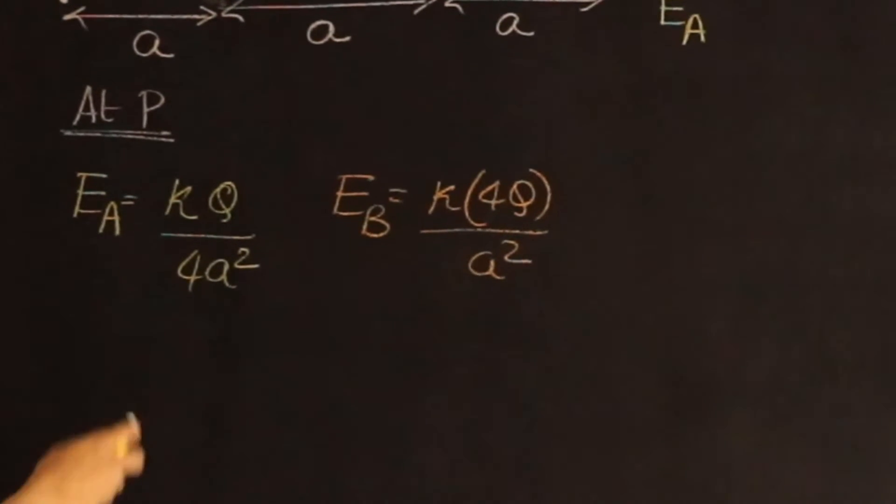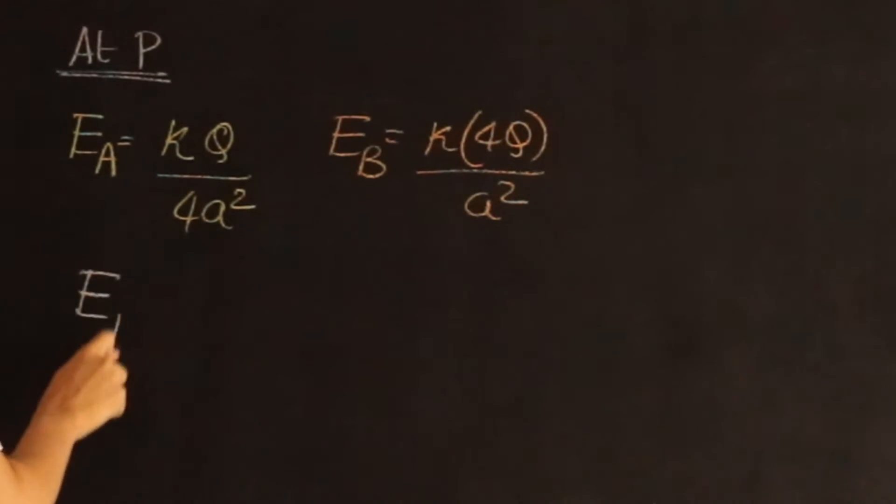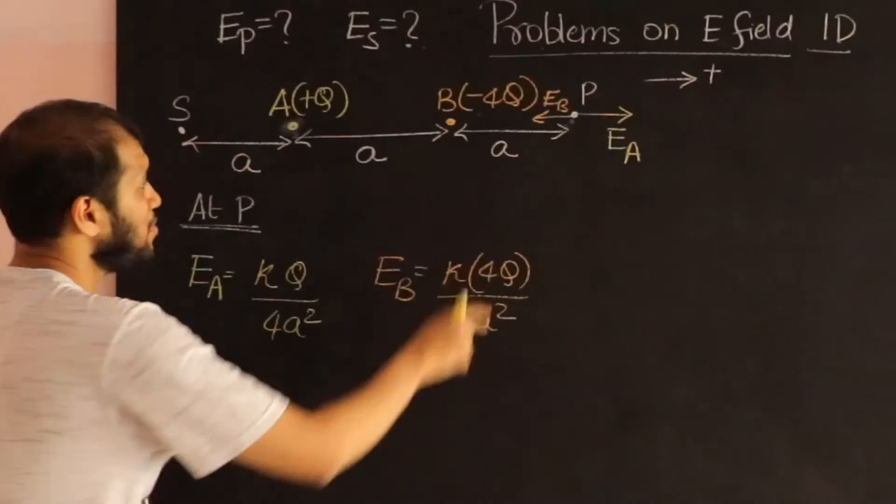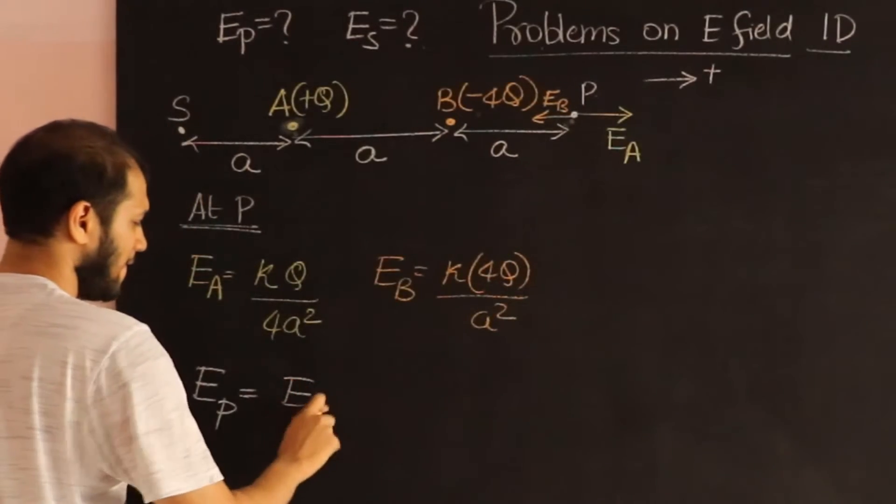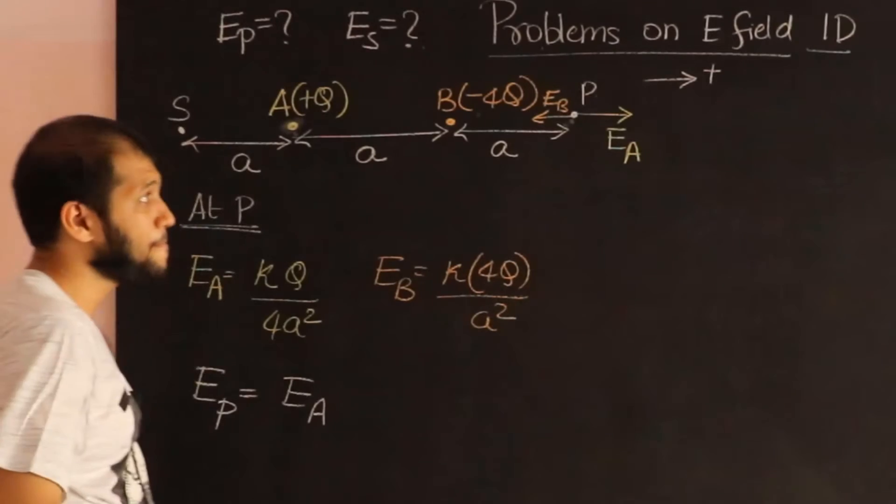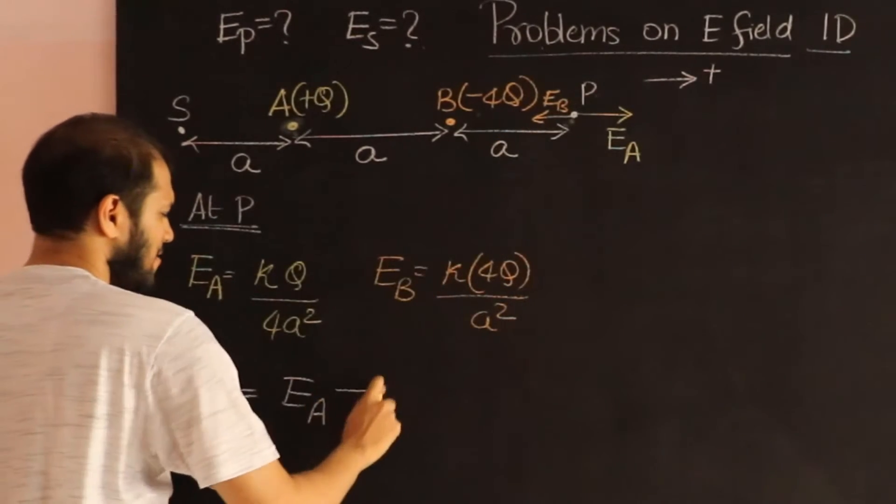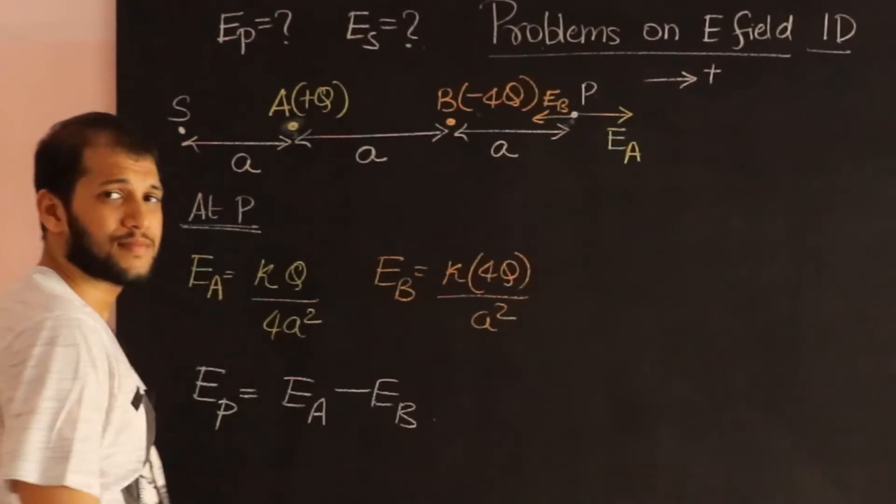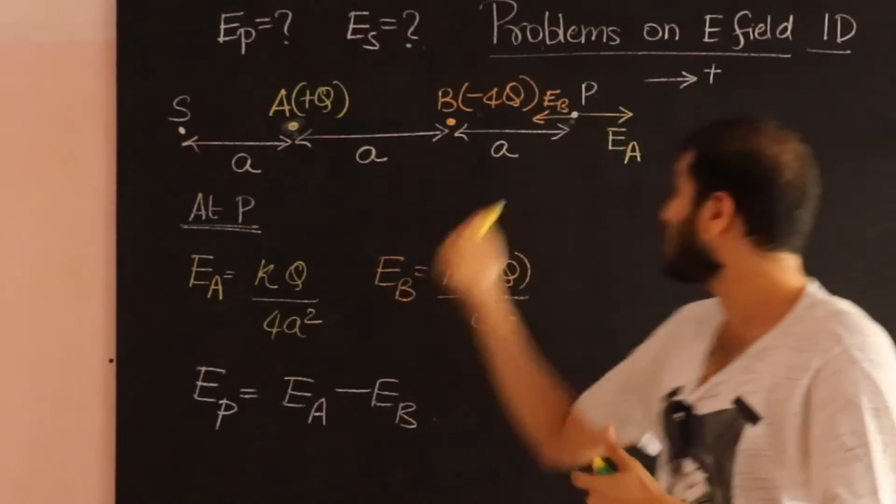Now, the total field, E at point P, is going to be plus E_A, because that's positive according to my sign convention, and minus E_B. Notice, this is purely due to my sign convention. You could choose a different sign convention, and you'll get a different answer based on that.